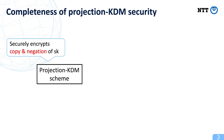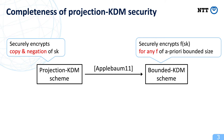One of the most widely studied security notions among KDM security is projection KDM security. Roughly speaking, projection KDM security allows us to encrypt copy and negation of secret key bits. So at first glance, this security notion looks somewhat weak. But Applebaum showed that projection KDM security is complete, in the sense that a projection KDM-secure encryption scheme can be transformed into a bounded KDM-secure encryption scheme. Bounded KDM security is one of the strongest forms of KDM security that allows us to encrypt the correct message of the form f of SK for any function f of a priori bounded size.